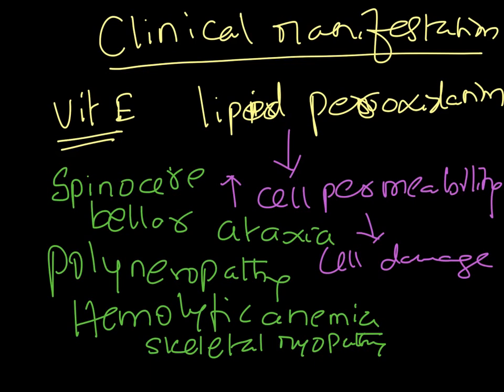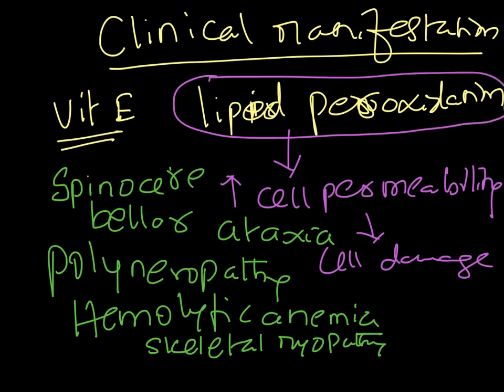To summarize the clinical manifestations of vitamin E deficiency: spinocerebellar ataxia, polyneuropathy, hemolytic anemia, skeletal myopathy, and pigmented retinopathy. All of these signs relate to lipid peroxidation caused by the loss of vitamin E's antioxidant function, allowing reactive oxygen species to damage cell membranes.